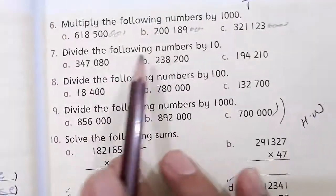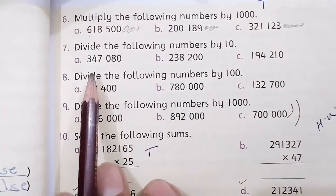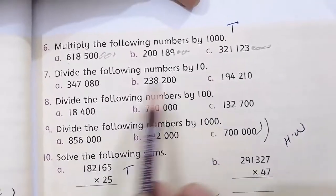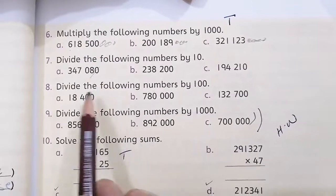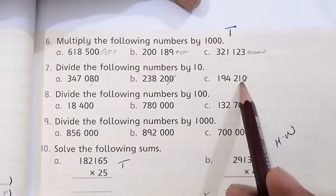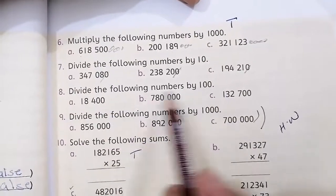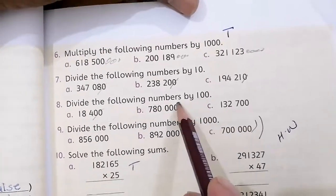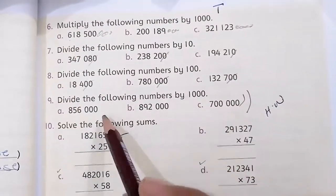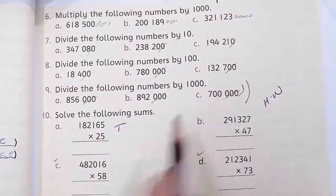Question number 7. Divide the following numbers by 10. Divide the columns by 10. If we do 10, this will be 0. So, 34708. Now, divide the following numbers by 100. If we do 100, this will be 2 columns by 10. Now, divide the following numbers by 1,000. 1,000, then 3 columns by 1,000.